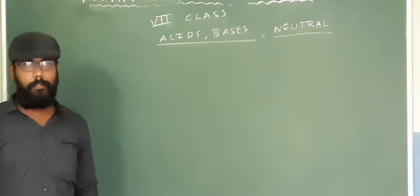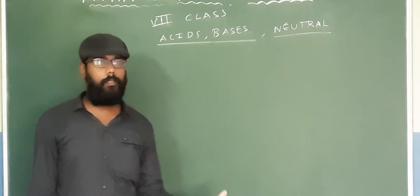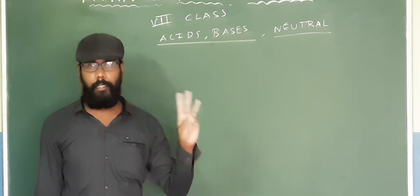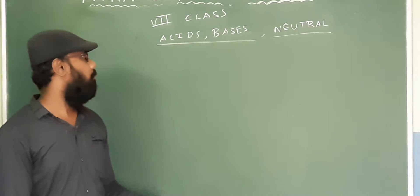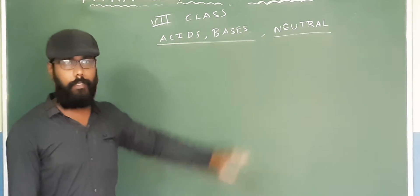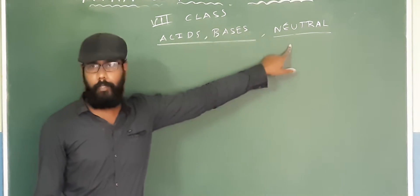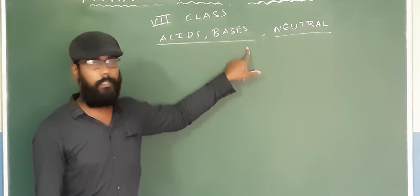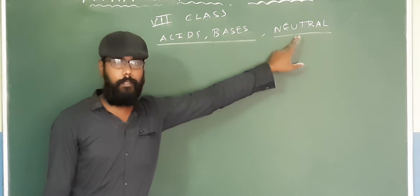In lower classes you learned the physical nature of matter is classified into 3 types: solids, liquids, and gases. Similarly, when it comes to the chemical nature of substances, they are also classified into 3 types: acids, bases, and neither acids nor bases.